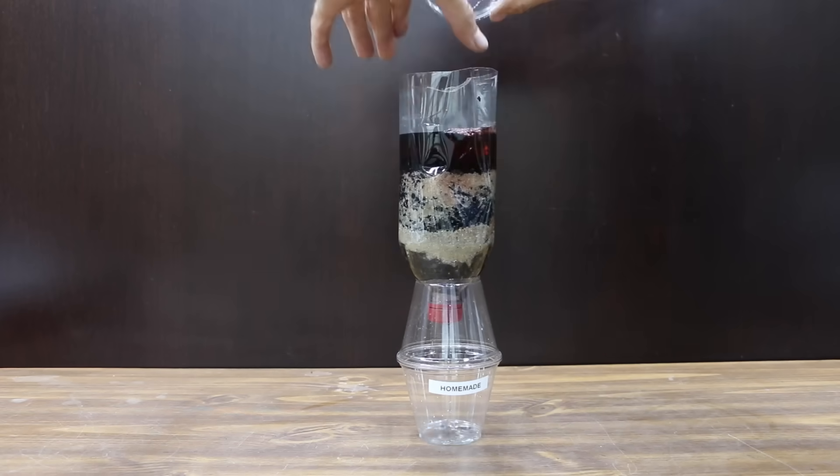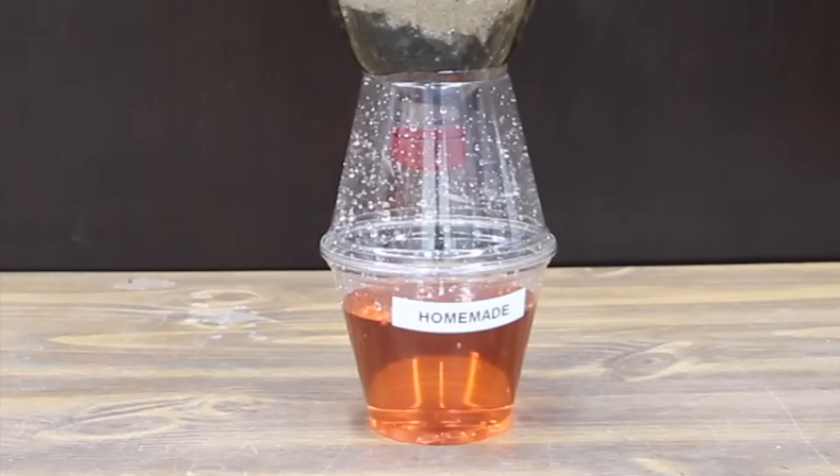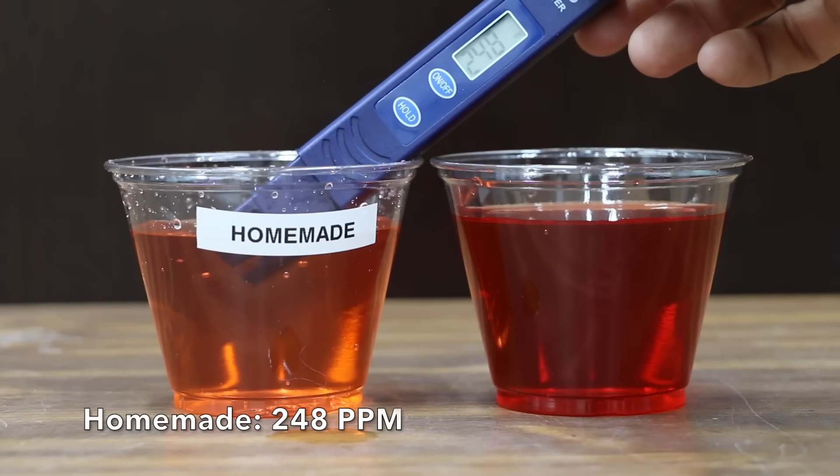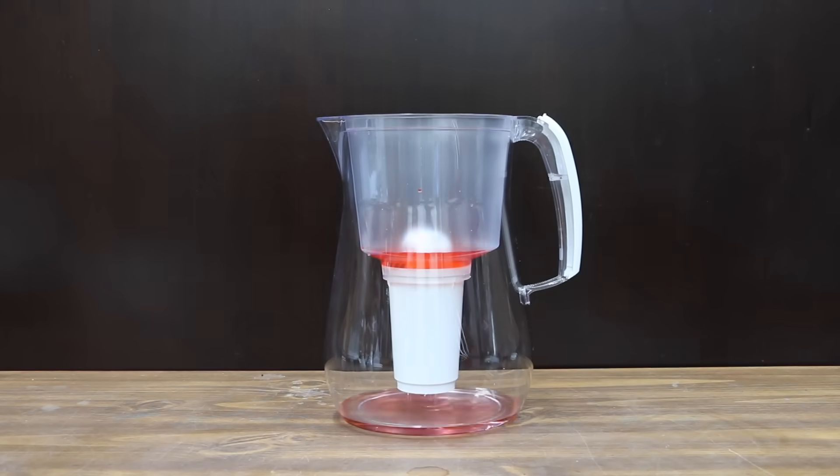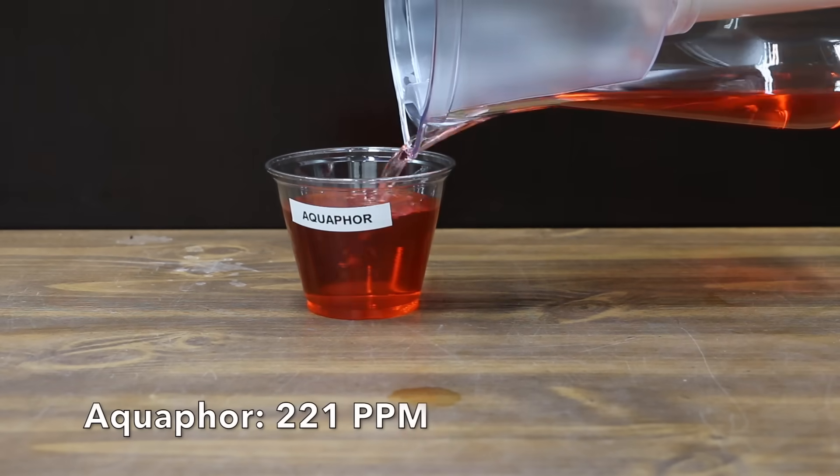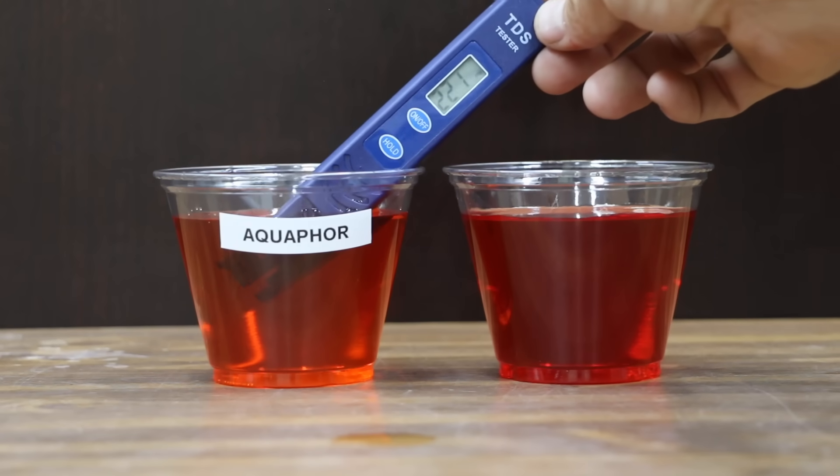The homemade filter actually cleaned up the water a little, and it's now at 248 parts per million compared to 364 for the untreated water. I added two cups of well water with food coloring to the Aquaphor. Aquaphor actually did better than the homemade filter at 221 parts per million.